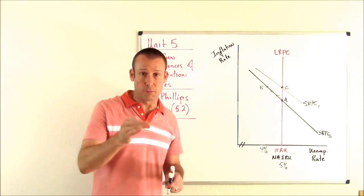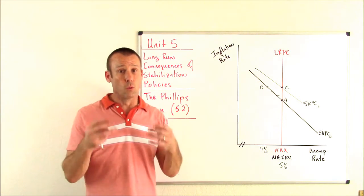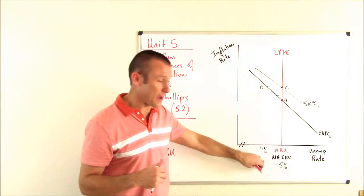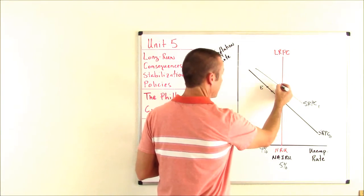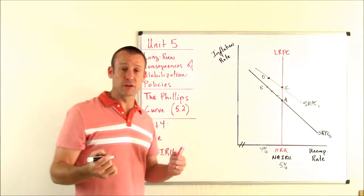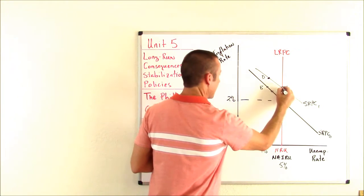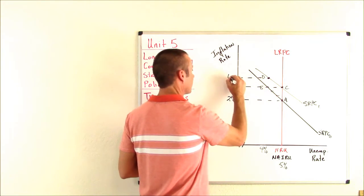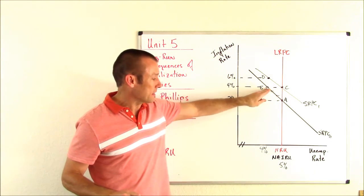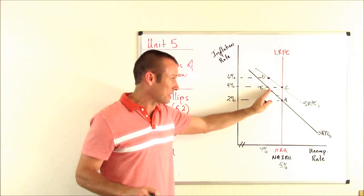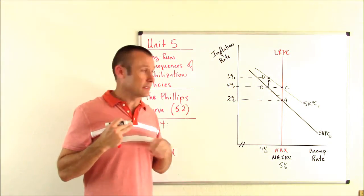The SRPC shifts right — remember, when SRAS shifts, SRPC shifts. We head to point C or D. The Fed sees unemployment rise and thinks we've fallen back into recession, so they do easy monetary policy again, driving unemployment back to 4%. But this time the inflation rate is higher — say 2% at A, 4% at C, 6% at D. Each time the Fed tries to maintain 4% unemployment, the inflation rate simply accelerates upward.